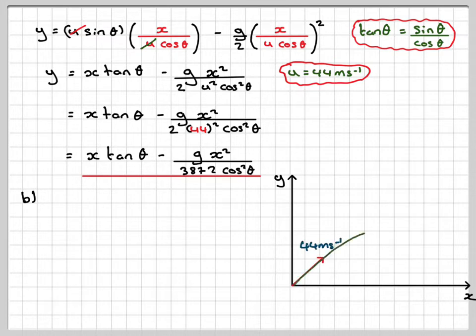For part b, we've got 44 metres per second. We've got a wall here at 180 metres, which is 10 metres high. And we know that the maximum height of this projectile is 60 metres. We've got to determine whether the projectile will hit the wall.